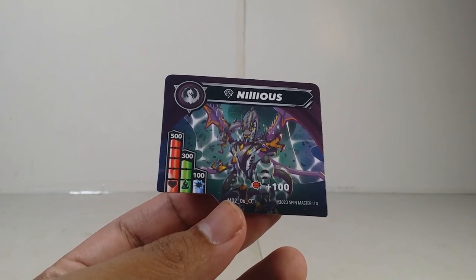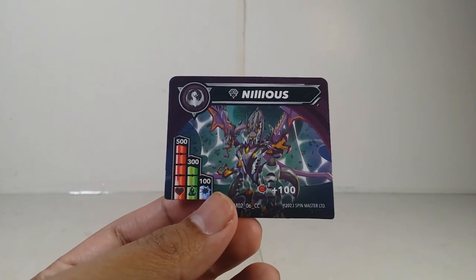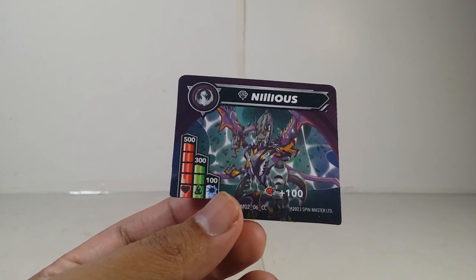If you have a red Bakugan with you, or I don't know what this symbol means, you get plus 100, so that's actually nice. You got the character card, the artwork of Diamond Nilius right there. That's actually pretty nice.